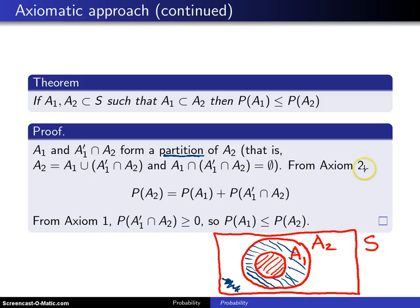Now, from Axiom 2, because the red and the blue are disjoint events, the probability of A1 plus the probability of A1 prime intersect A2 equals the probability of A2. So we're using Axiom 2 to get that result.